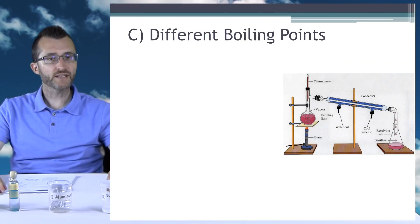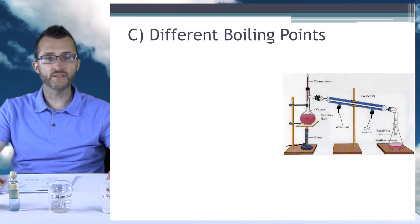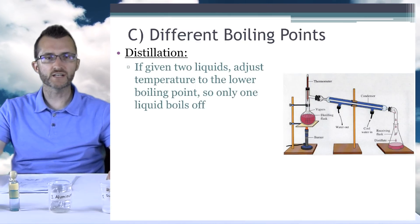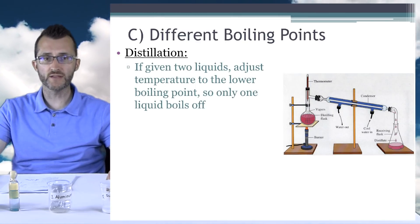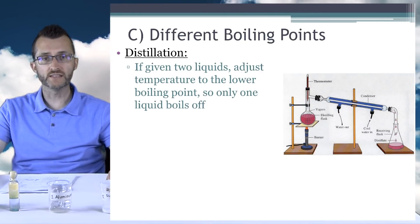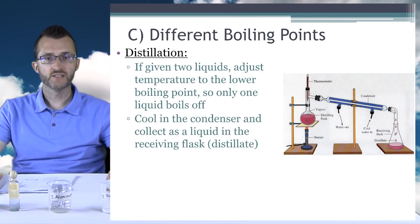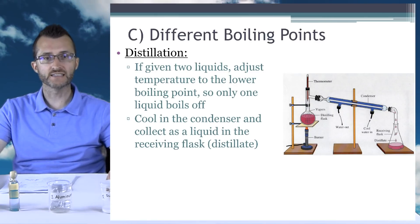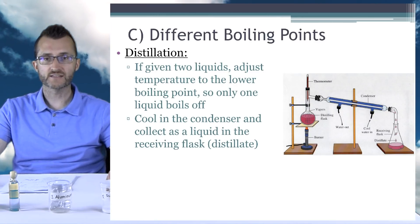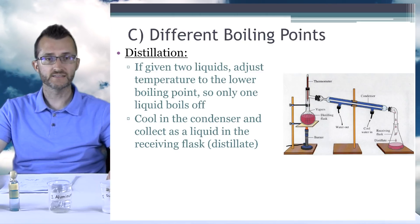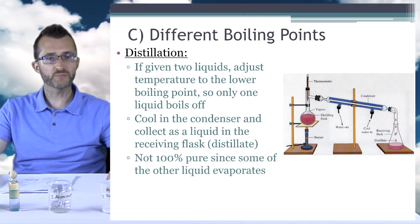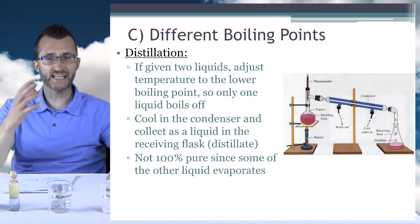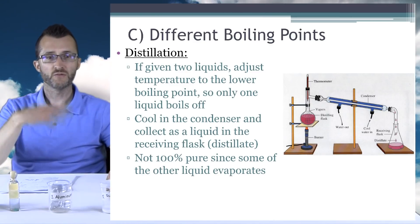Separating mixtures based on different boiling points — distillation. If given two liquids, adjust the temperature to the lower boiling point so that only one liquid boils off. You're going to cool this vapor in the condenser and collect it as a liquid in the receiving flask. We call this the distillate. It's not 100% pure since some of the other liquid evaporates, so you can't get all of one liquid without some contamination from the other.